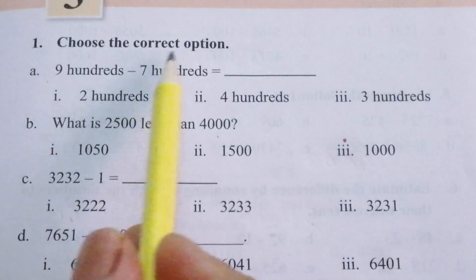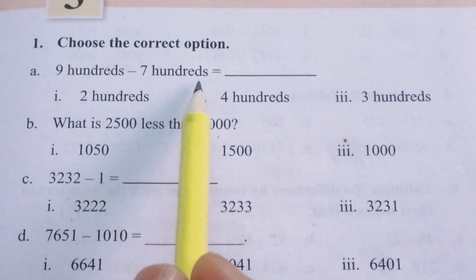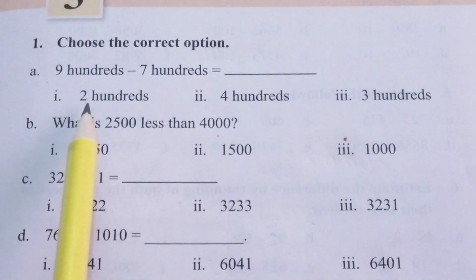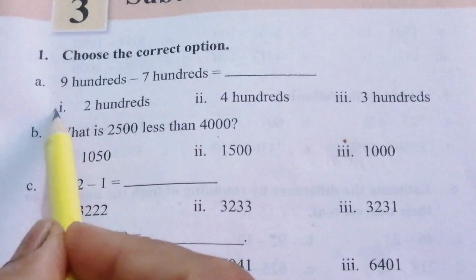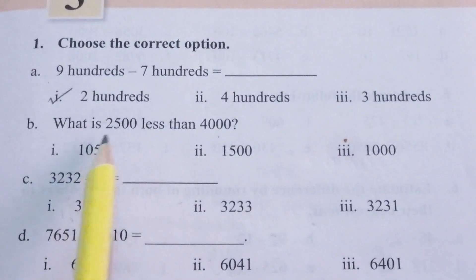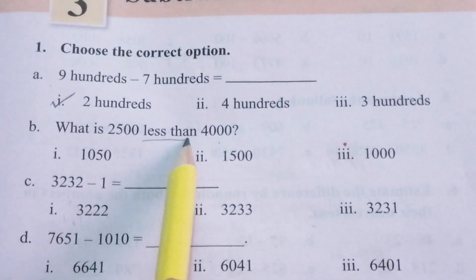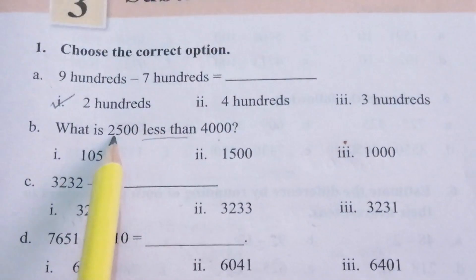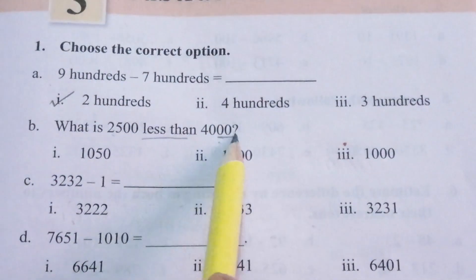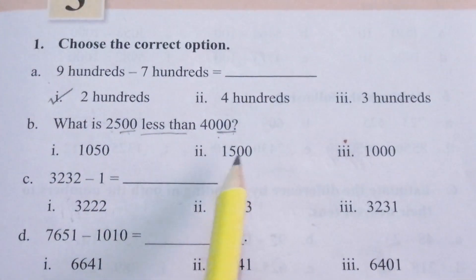Question 1: Choose the correct answer. A: Nine hundredths minus seven hundredths — nine minus seven is two, so the answer is two hundredths. B: What is 2500 less than four thousand? Less than means we have to subtract the smaller number from the bigger number. The last two digits are zero, so zero minus zero gives double zero at the end.